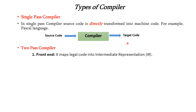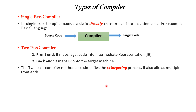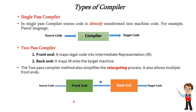In a two-pass compiler, we have two passes: one is front-end and another one is back-end. In the front-end, the source code is transformed into the intermediate representation. This intermediate representation is given as input to the back-end, which generates the target code or machine code. The two-pass compiler simplifies the retargeting process — it allows multiple front-ends. That is, for one back-end we can have multiple front-ends. The back-end can be fixed and the front-end can be changed as necessary. This concept is called the retargeting process. The diagram illustrates that source code is given to the front-end, which generates the intermediate representation, which is given to the back-end, which in turn generates the target code.